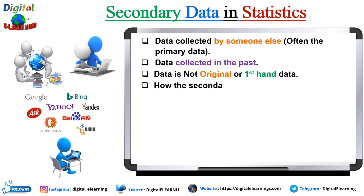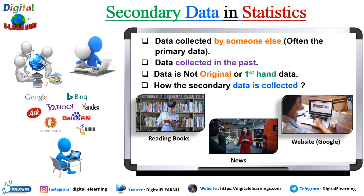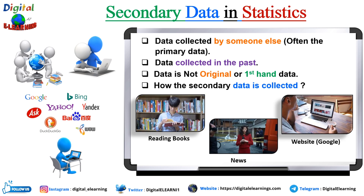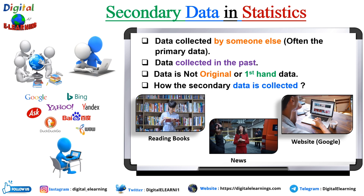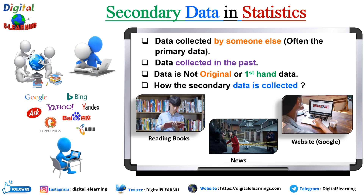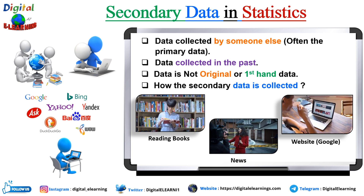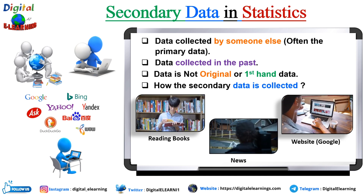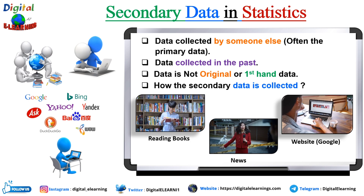Now you must be wondering how we collect secondary data. What are the different sources? These sources include reading books, listening to news or articles, and looking at websites or search engines like Google and Yahoo. Overall, secondary data is not firsthand data like primary data — it has already been collected by someone else in the past for a different purpose, is typically gathered from existing sources, and is usually not real-time data. Although it is less time-consuming and less expensive, it is not as reliable. As a result, secondary data is often utilized in low-level research projects where the need for precision is less critical.